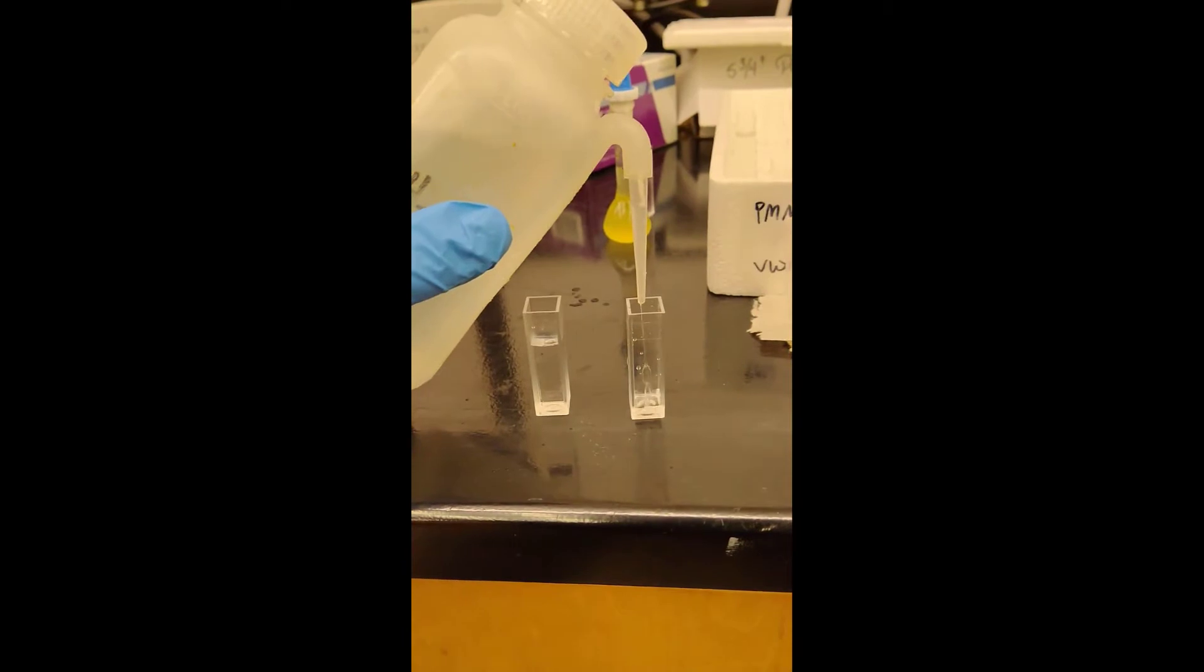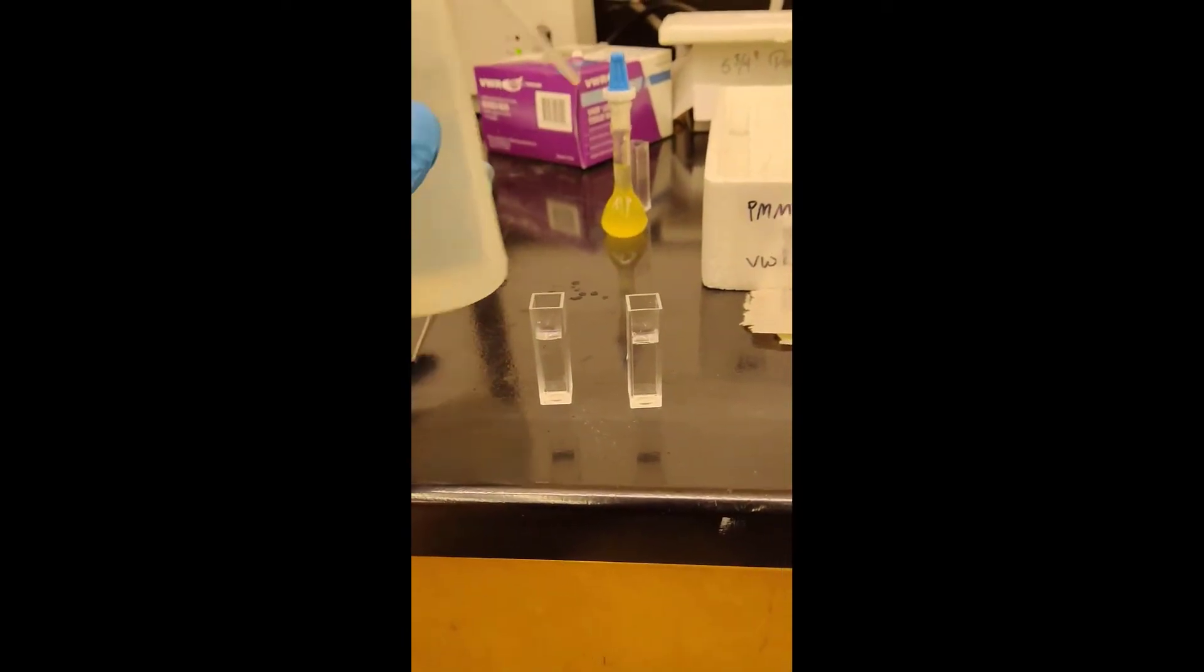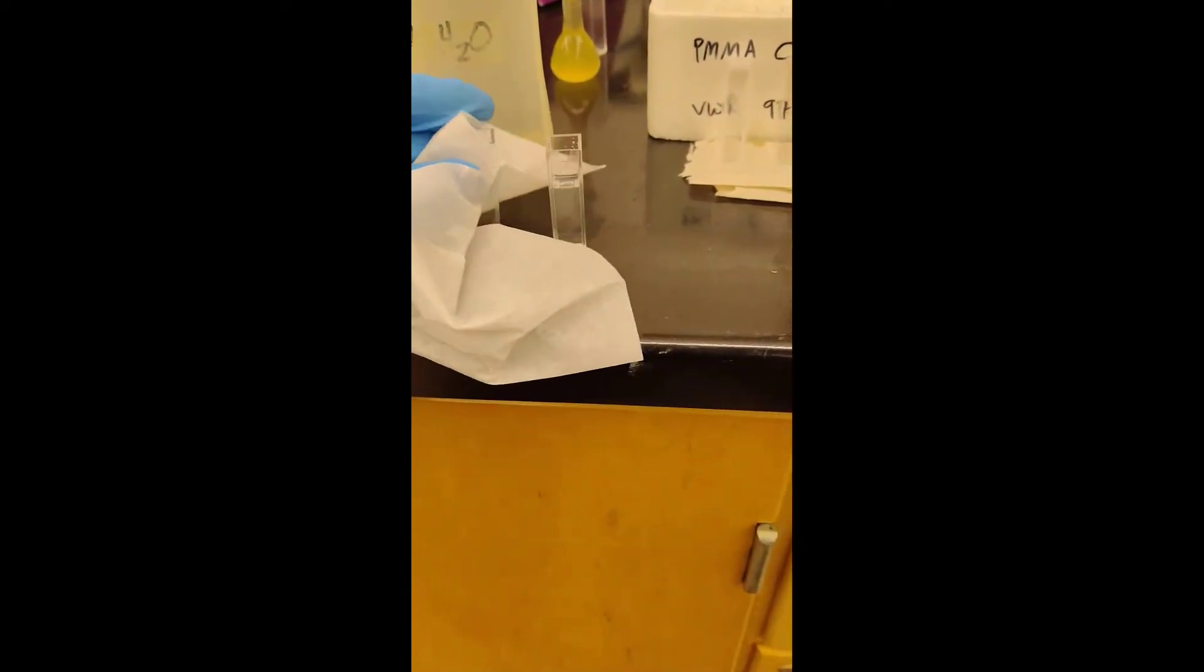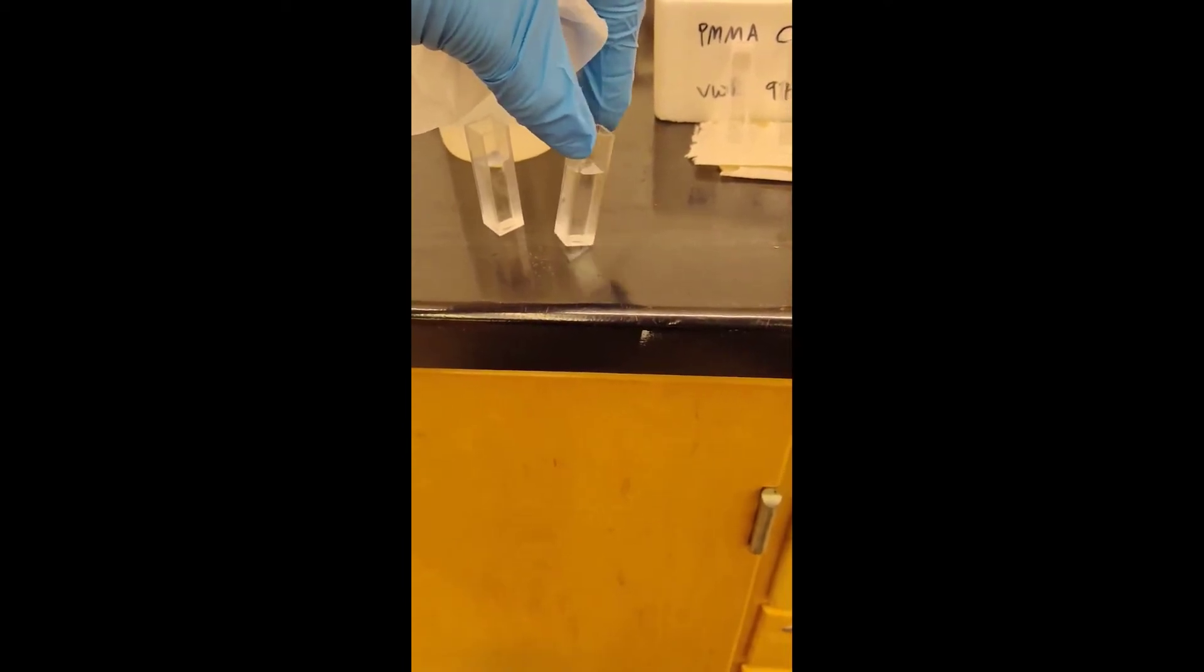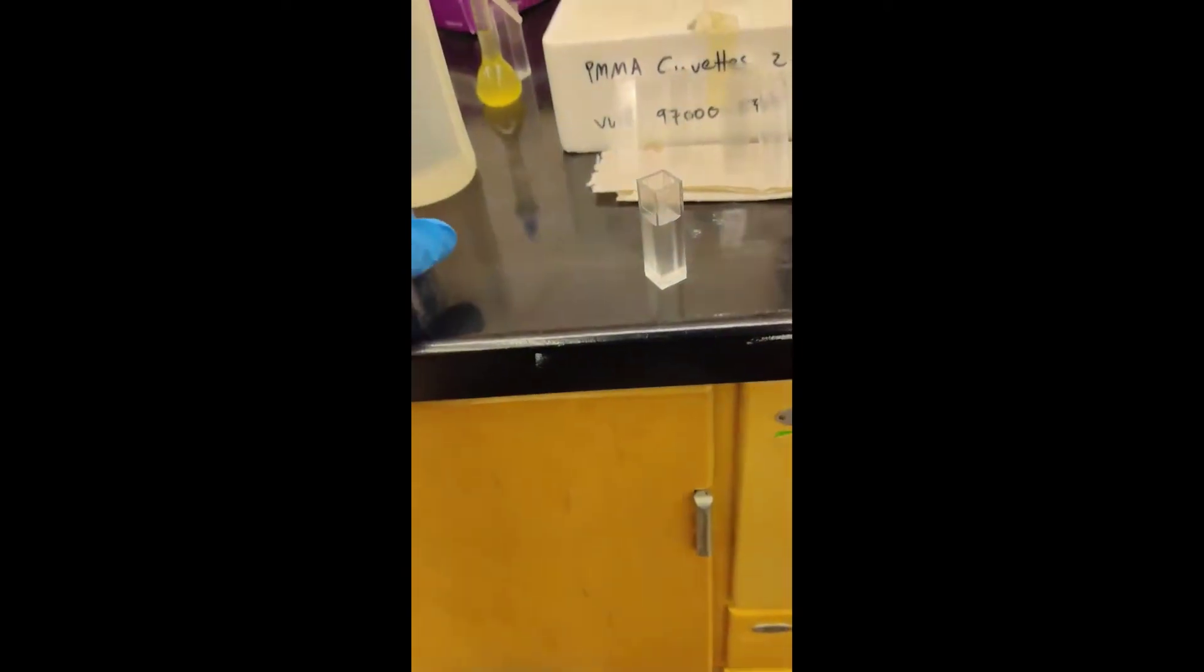Right here I'm filling up two clean PMMA cuvettes with DI water, filling them about two-thirds of the way up. I'm going to grab a kimwipe and wipe down the sides of the cuvette really thoroughly to make sure there are no fingerprints or anything else on them. The cuvettes have two different sides: an opaque side and a transparent side. The light is going to be shining through the transparent sides, so make sure the transparent sides are really clean.